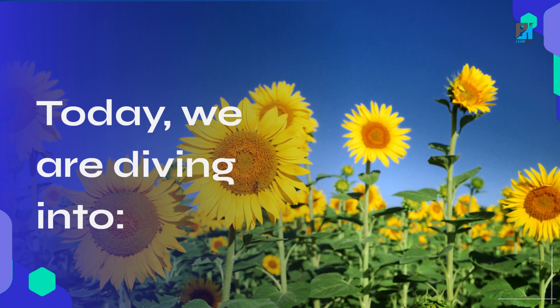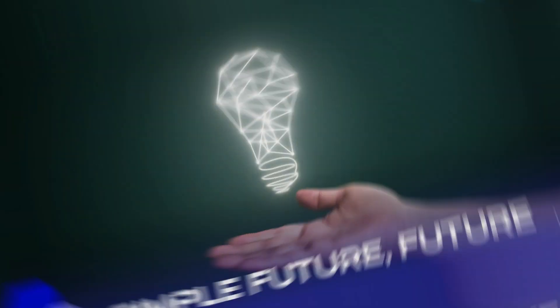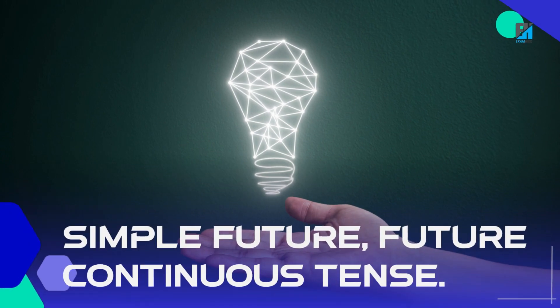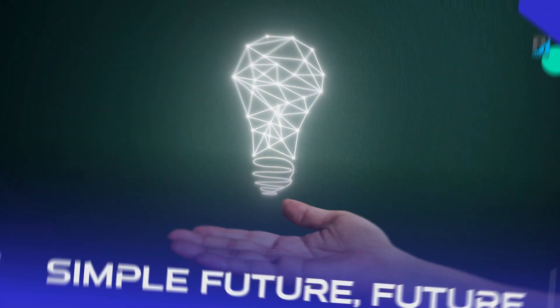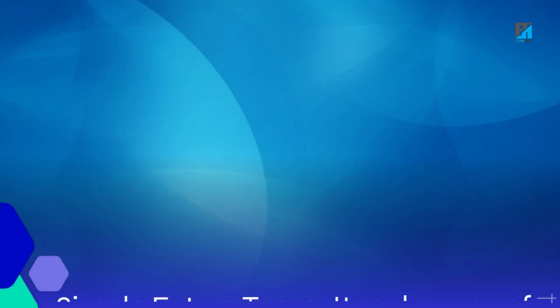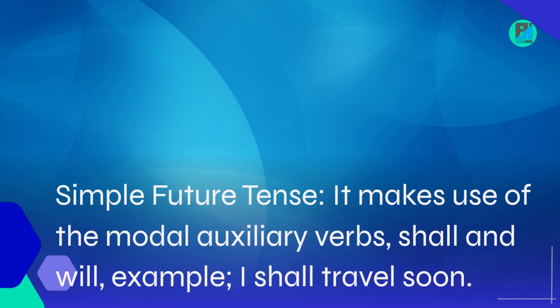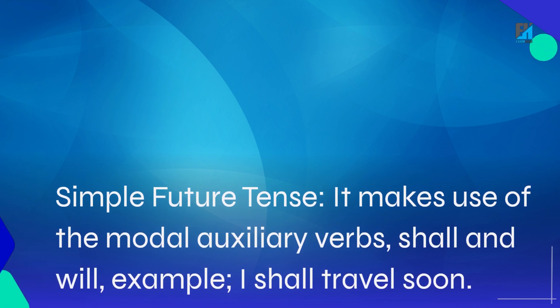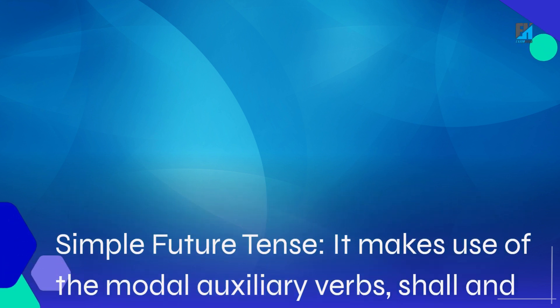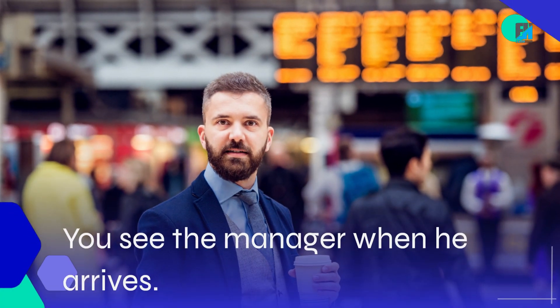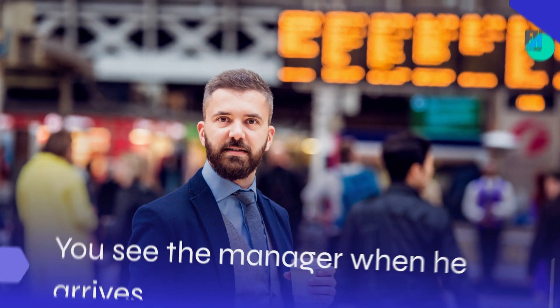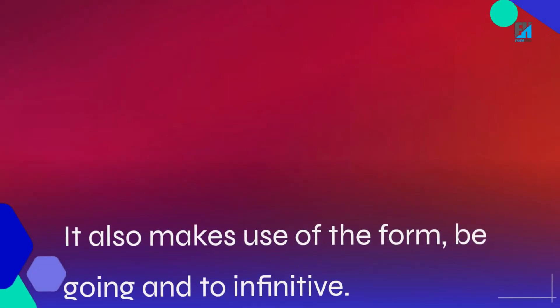Today we are diving into simple future and future continuous tense. Simple future tense makes use of the modal auxiliary verbs 'shall' and 'will.' For example: 'I shall travel soon' and 'You will see the manager when he arrives.'